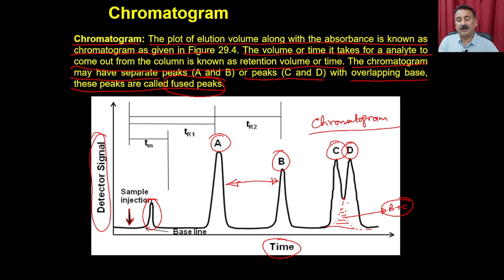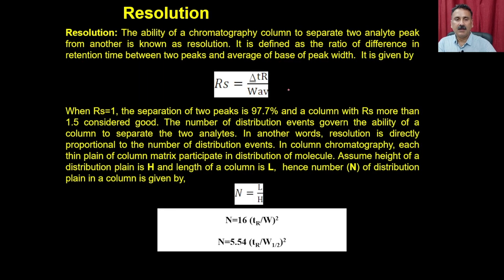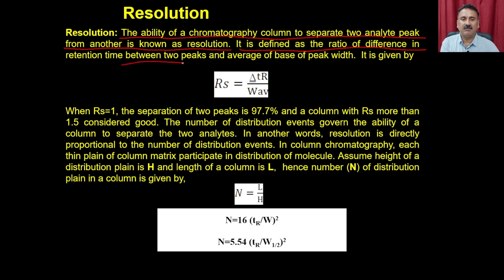The resolution — the ability to separate two peaks — is low for peaks C and D. Resolution is defined as the ratio of the difference in retention time between two peaks to the average of the base widths of those peaks. It is directly proportional to the difference in retention times and inversely proportional to the average base width.